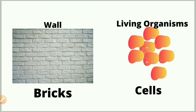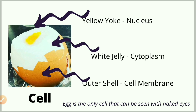Now we reach another topic at the end of this chapter — cells. What is a cell? Think of a building: it is made up of walls, and every wall is made up of small bricks that all look the same. Similarly, living organisms are made up of small, same-looking units called cells. These are very small — like tiny bricks — and cannot be seen with the naked eye; we need a microscope to see them.